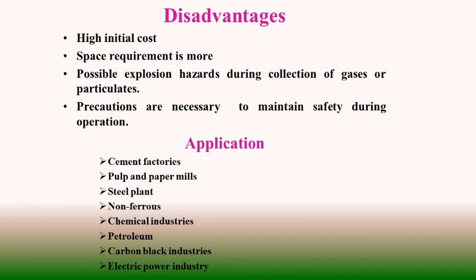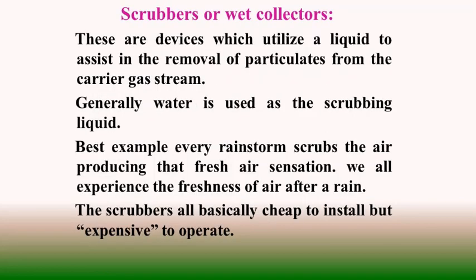Almost all industrial plants handling flue gas emissions use ESP arrangements: cement factories, pulp and paper mills, steel plants, non-ferrous industries, chemical industries, petroleum, carbon black industries, and electric power utilities all utilize ESPs for the purpose of emission control.